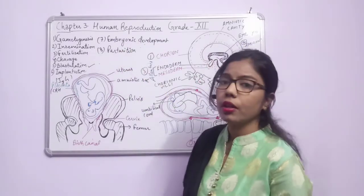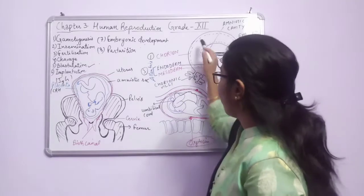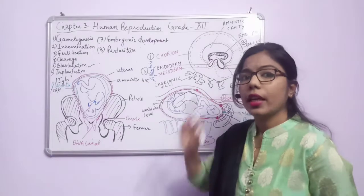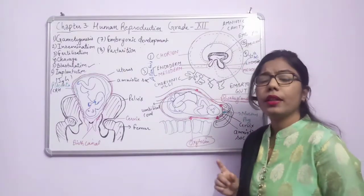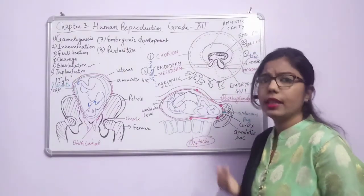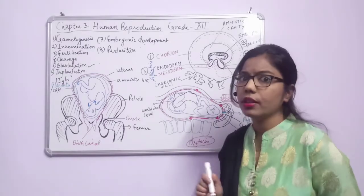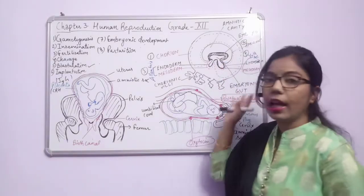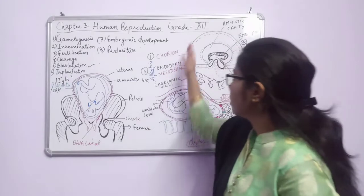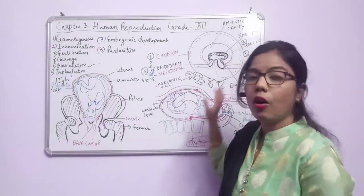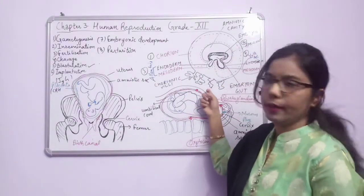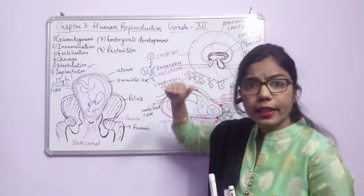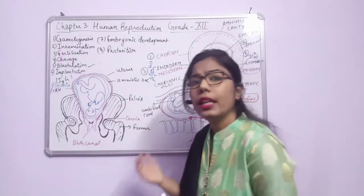The remaining topic we need to cover in embryonic development is: after forming the blastula stage, it attaches to the endometrium lining. Here, the outer cell mass and inner cell mass form structures called extra-embryonic membranes. The trophoblast — the outer cell of the embryo — will form the chorionic villi.